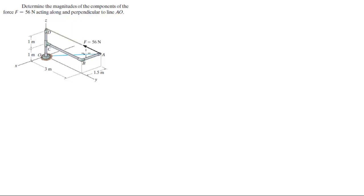So basically they're telling you that there's a component of this force going along AO, which is parallel, and perpendicular will be this one, forming this right triangle right here. So they want you to find these two forces.